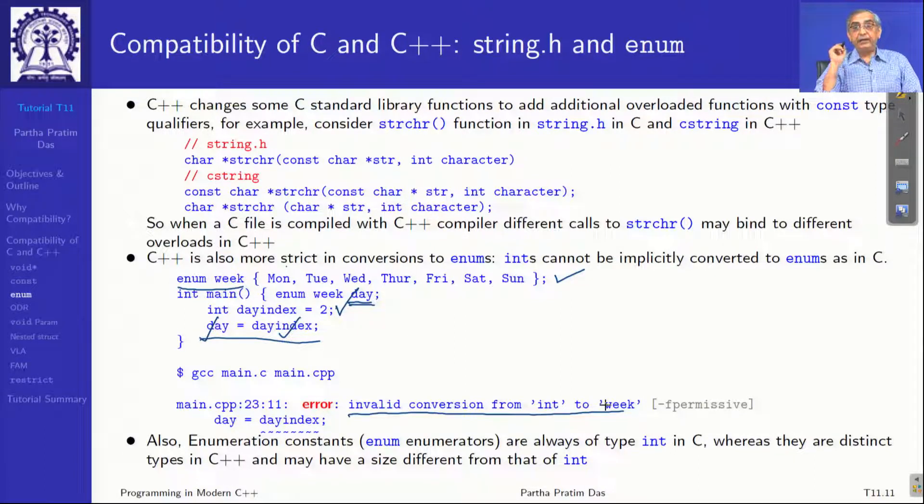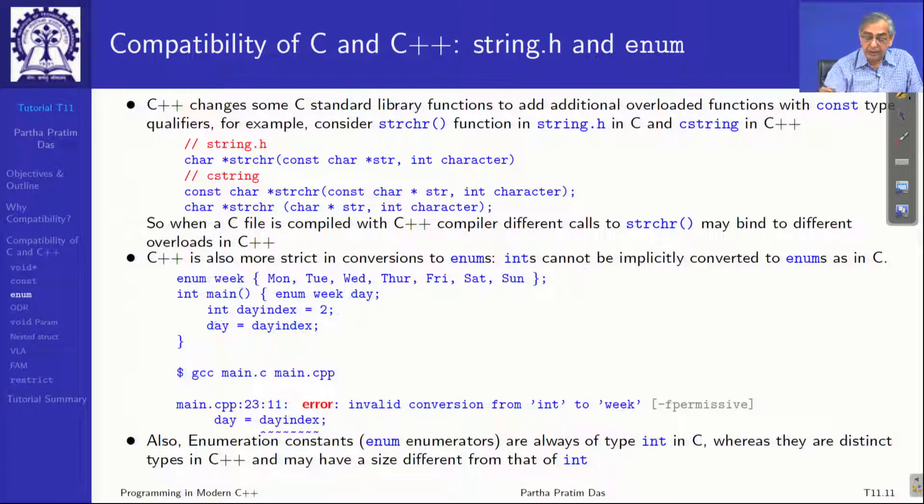The reason C++ gives you an error is enum is not a subtype of int in C++. Enum is a different type in C++, so it needs explicit conversion. Also, the enum constants like all these different seven constants here, these constants are of type int in C, whereas they are distinct types in C++ and may have a different size from int. For example, if there are seven, it could be they are represented as 3 bits, which gives you 8 options, not a whole 32-bit or 64-bit integer.